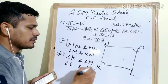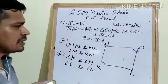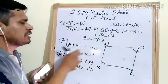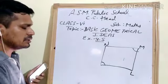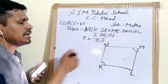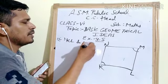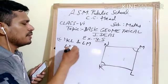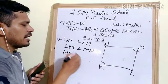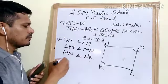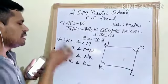Angle N — so these are the opposite angles. For part C, two pairs of adjacent sides: adjacent means neighboring sides. So here the adjacent sides are KL and LM, LM and MN, MN and NK, and NK and KL. So these are the adjacent sides — hope you understand.